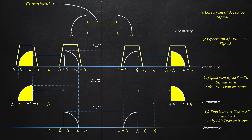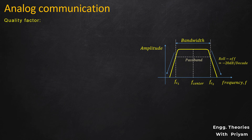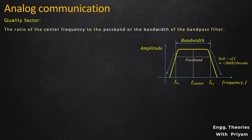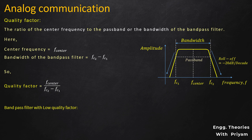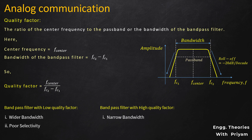Proper generation of the SSB-SC modulated signal from the DSB-SC modulated signal entirely depends on the selectivity of the bandpass filter, which is characterized by the quality factor. The quality factor is the ratio of the center frequency to the passband (bandwidth) of the bandpass filter: Q = F_center / (FC2 − FC1). A bandpass filter with a low quality factor has wider bandwidth and poor selectivity, while one with a high quality factor has narrow bandwidth and high selectivity.